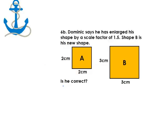Anchor question is: Dominic says he has enlarged his shape by a scale factor of 1.5. Shape B is his new shape. Is he correct? So shape A is the original shape, which has a perimeter with one length, two centimeters, two centimeters, two centimeters and two centimeters square. So the perimeter is eight centimeters.